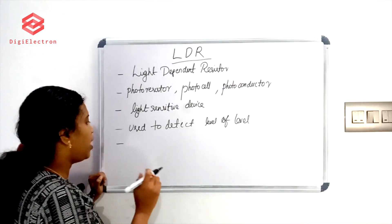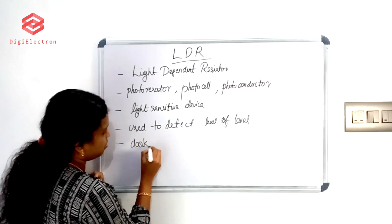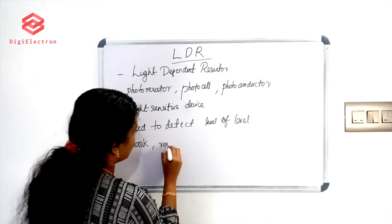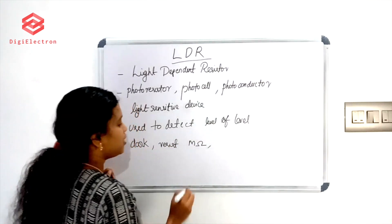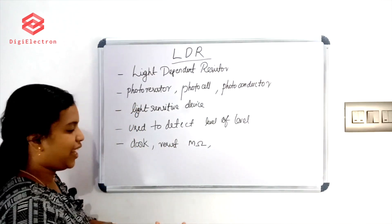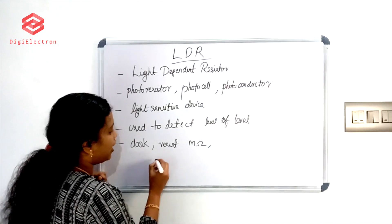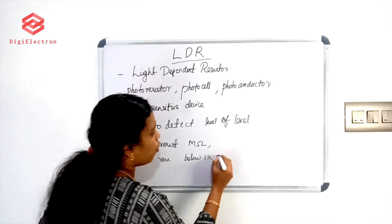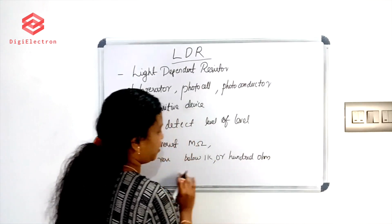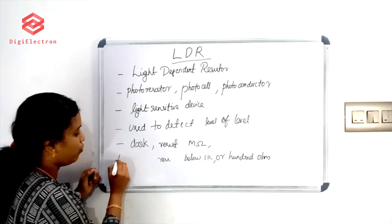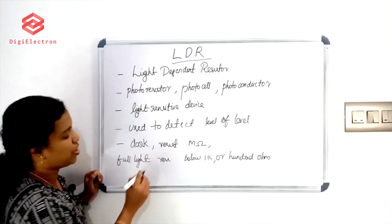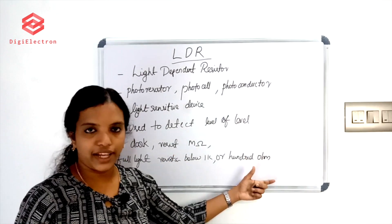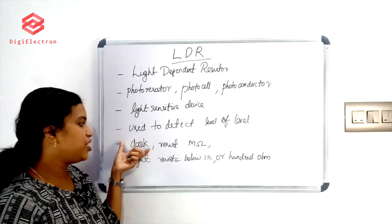If you have full light or maximum light intensity, you will have resistance below 1k ohm. If you have full light, resistance can go below 100 ohm.